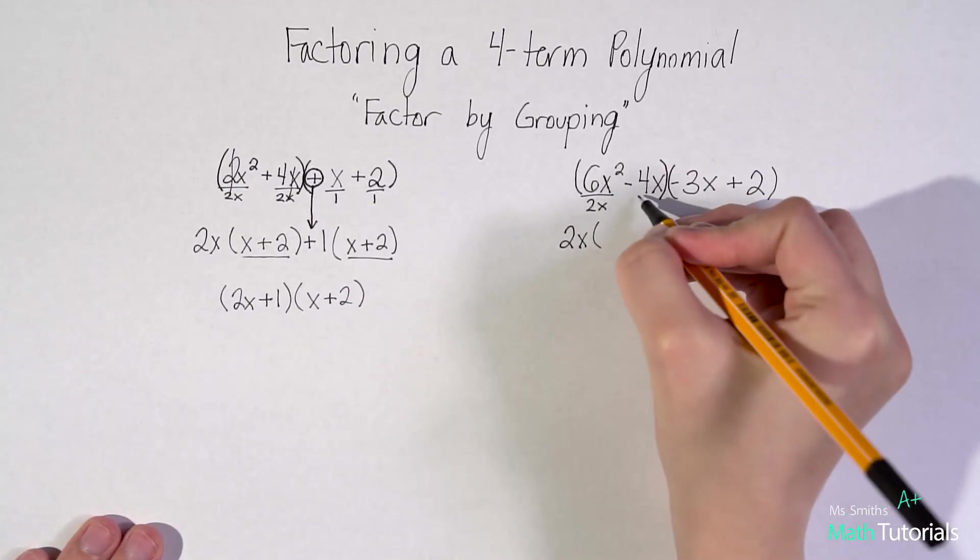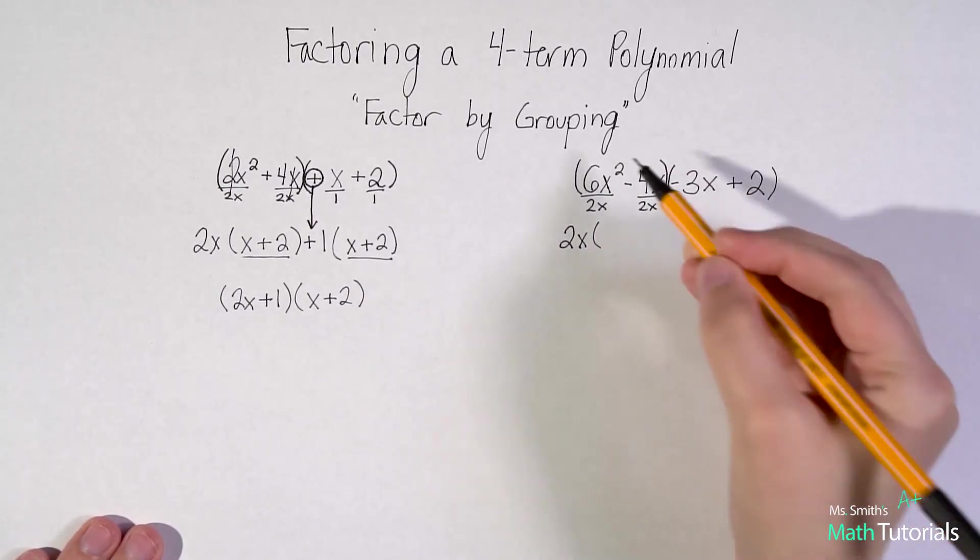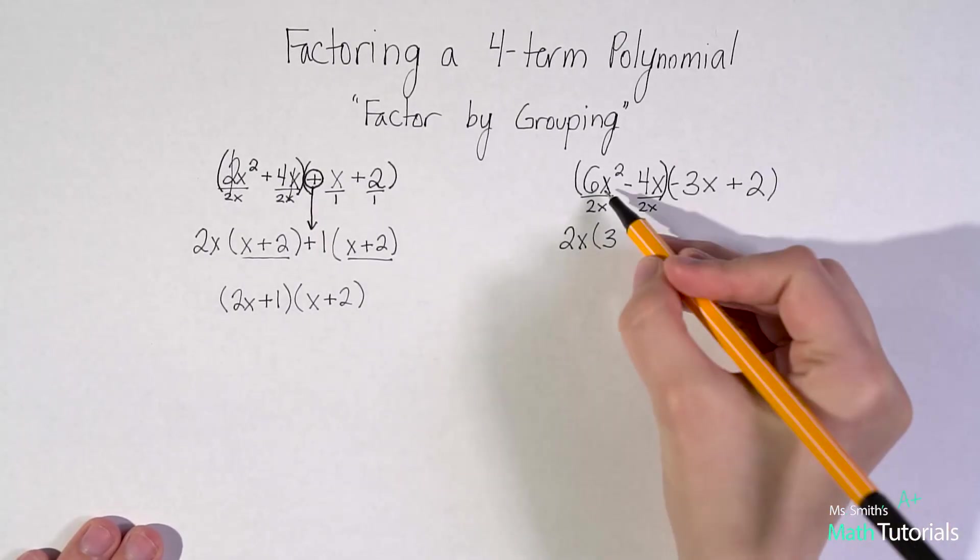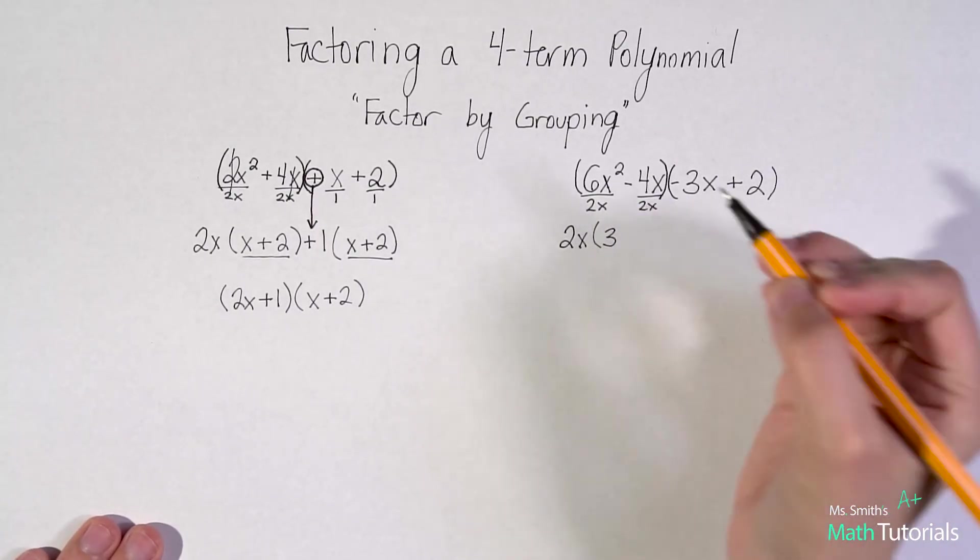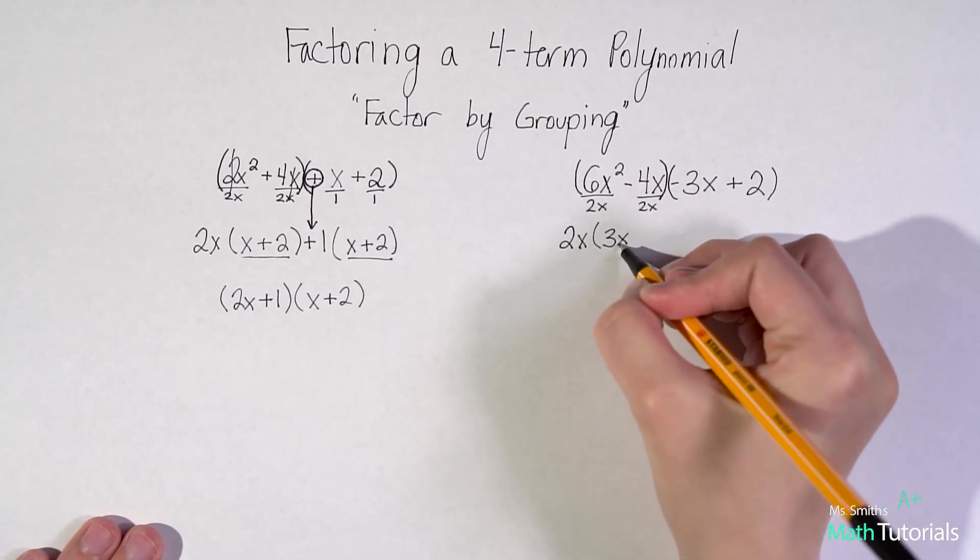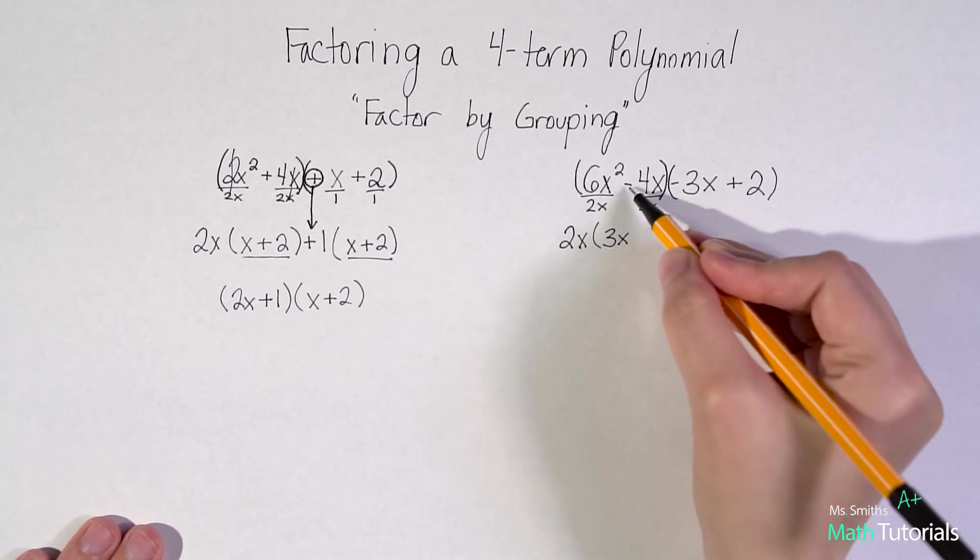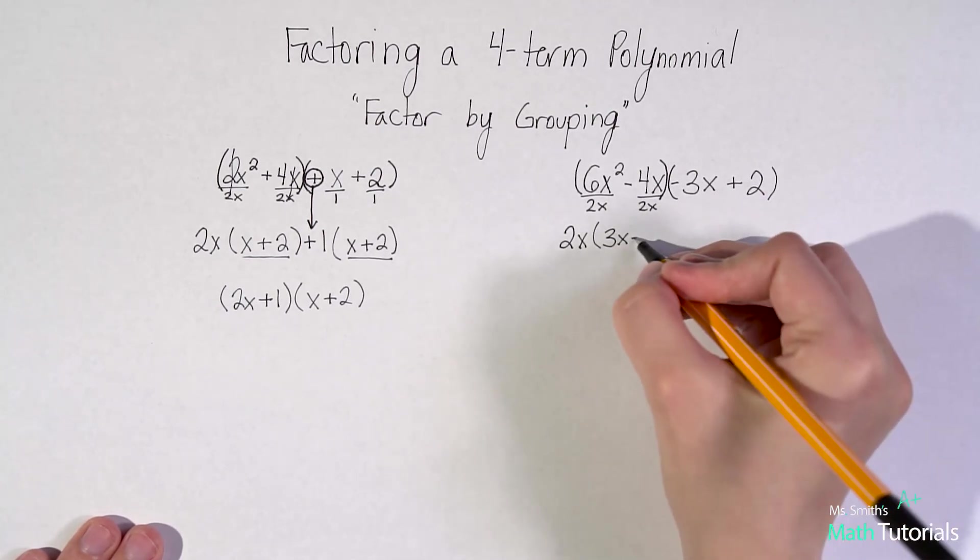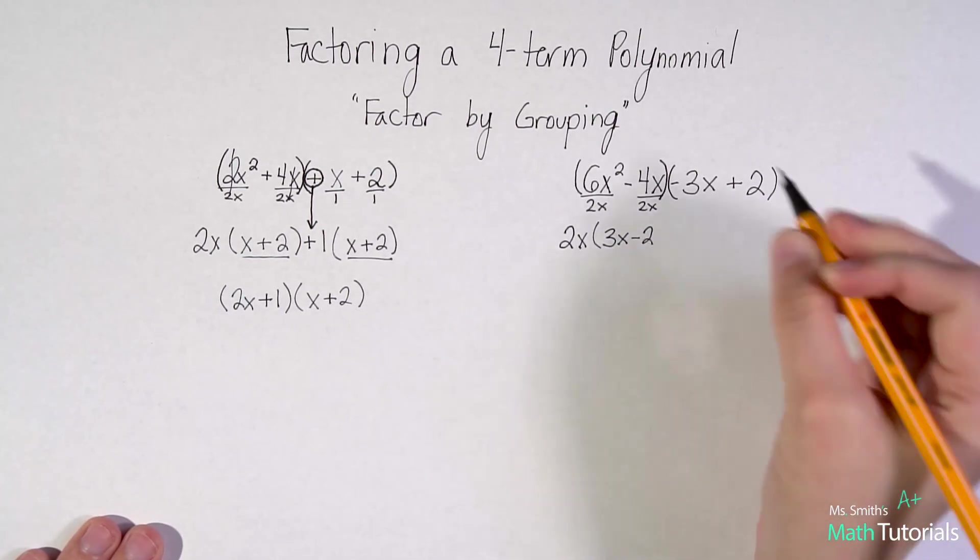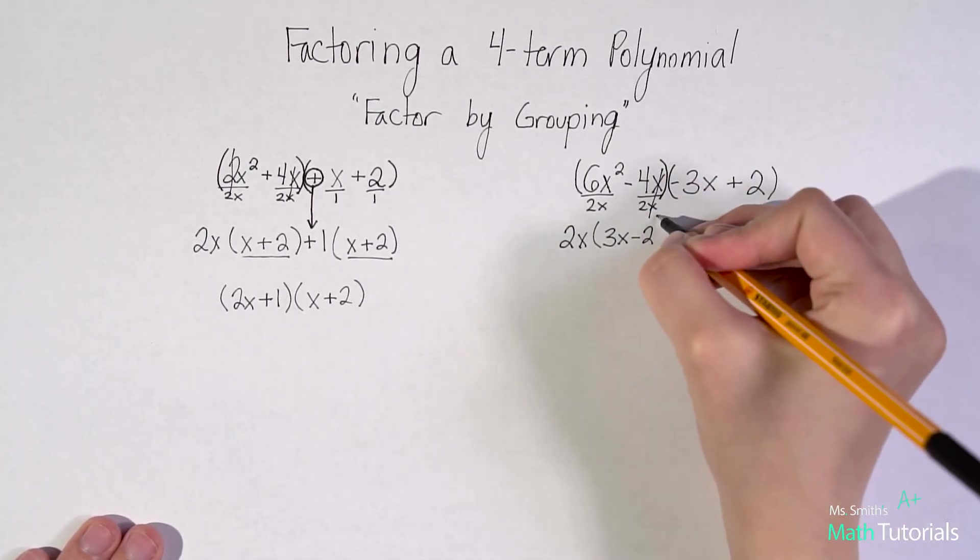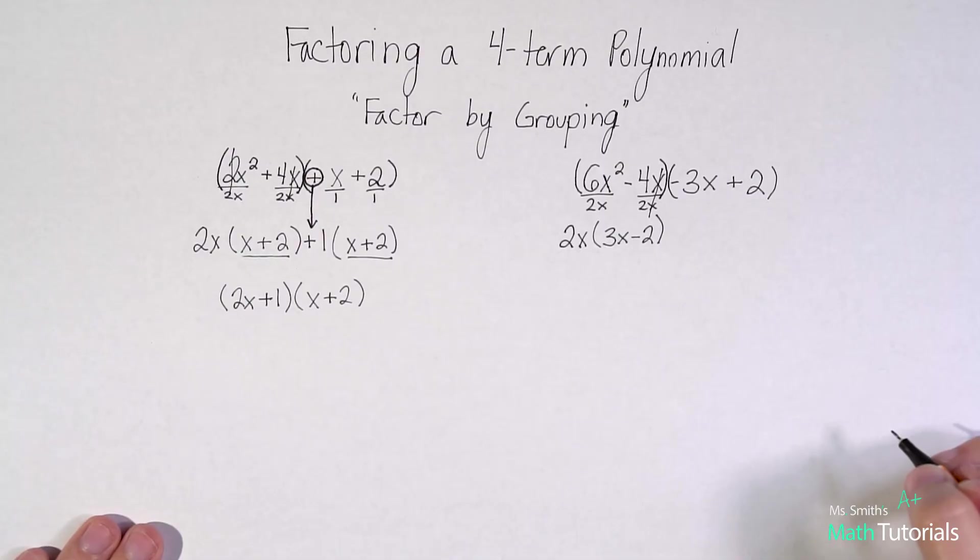So let's factor that out. Let's divide it out and see what we have left. 6 divided by 2 is 3. X squared divided by x is just x. Right? We had two. We're pulling one out. We just have one left. Negative 4 divided by 2 would be negative 2. X divided by x cancels to one. So that's it for our first grouping.